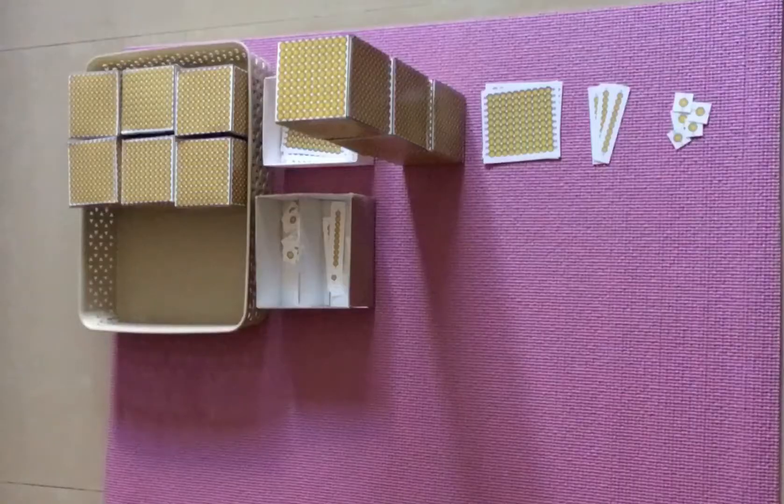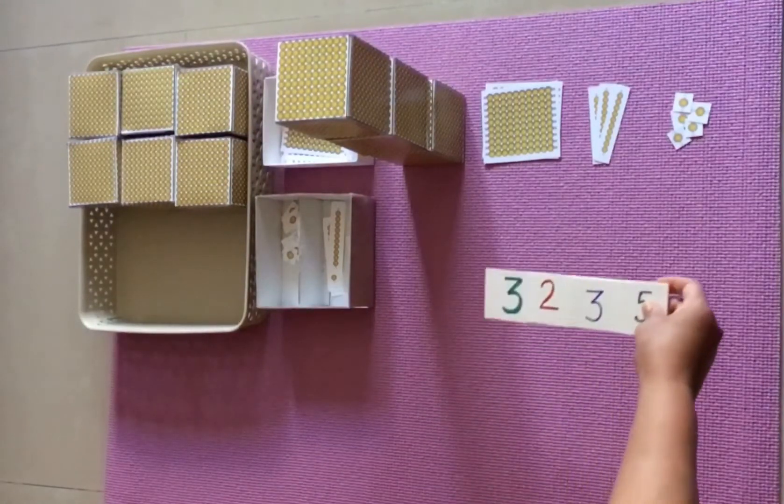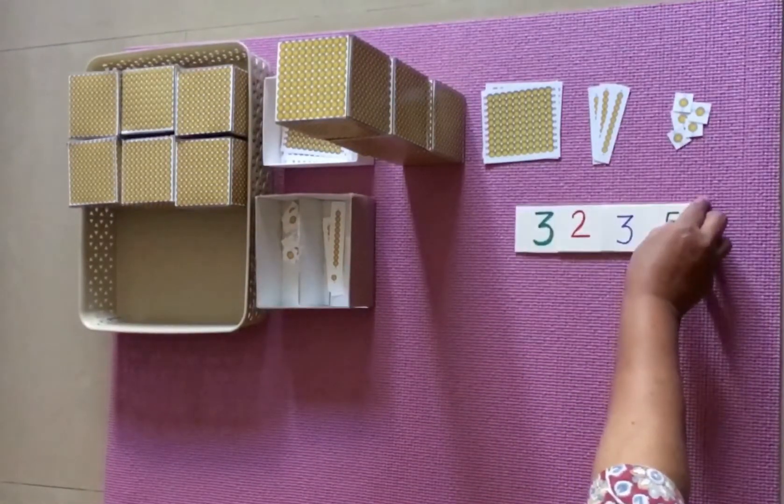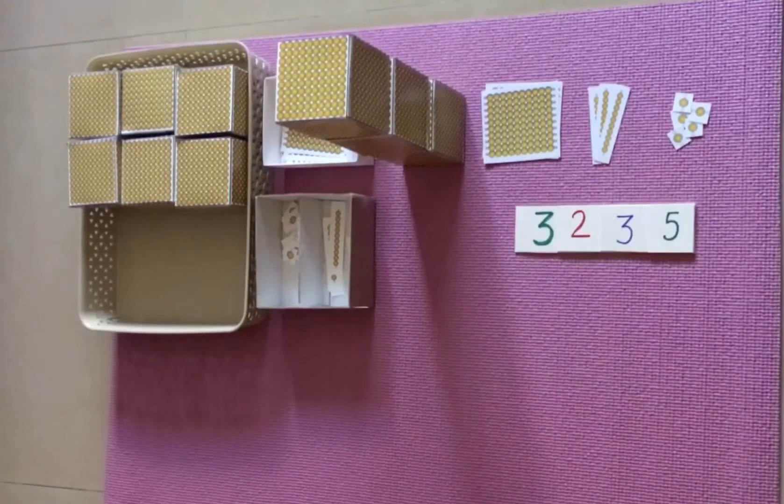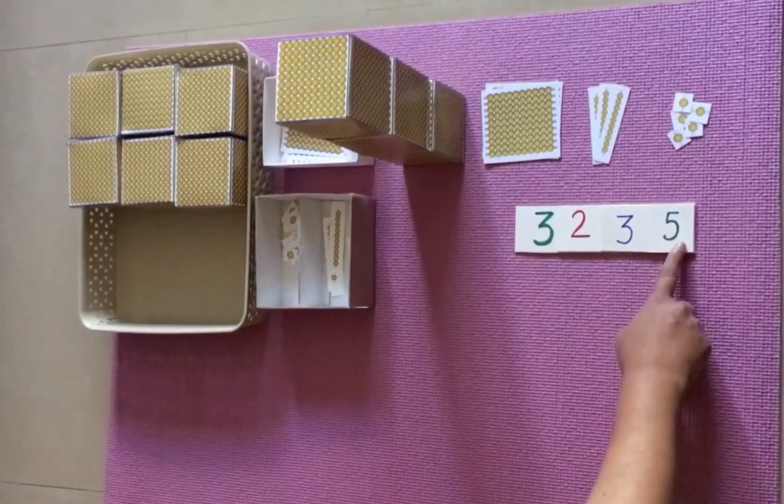Now we'll ask the child to place the cards below the quantity. Let's read the quantity: 3 thousand, 2 hundreds, 3 tens, and 5 ones.